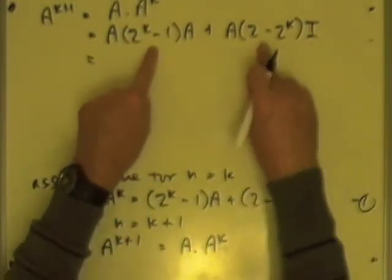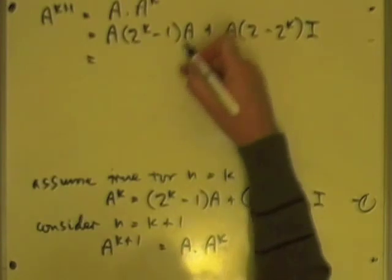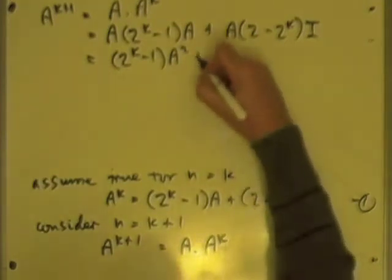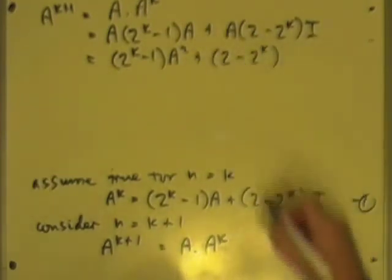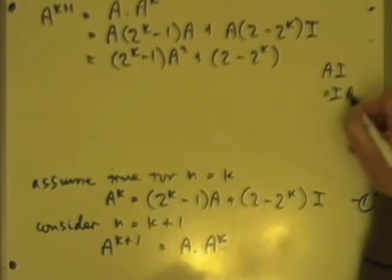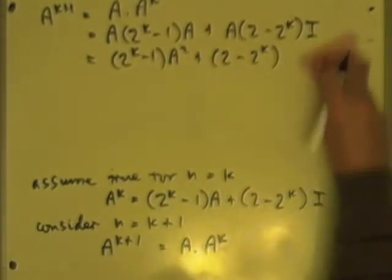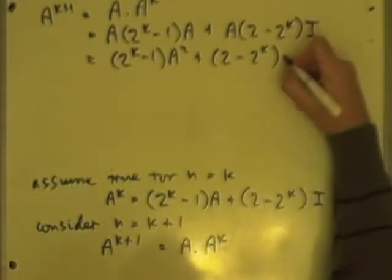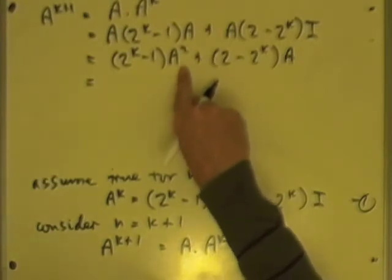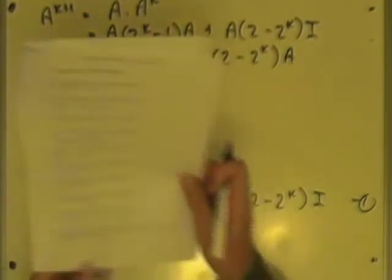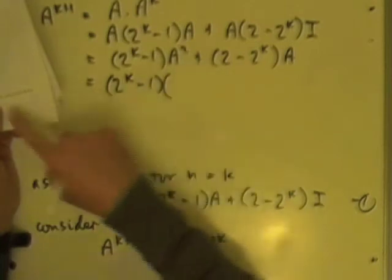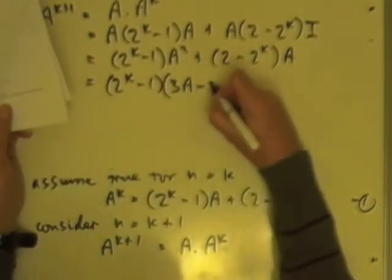These are matrices, but these multiplying factors are just constants, so I can take them to the front. That gives me 2 to the k minus 1 times A squared, and A times I is just A since I is the identity element. Now A squared was already defined in the first part of the problem: A squared equals 3A minus 2I. So I have 2 to the k minus 1 times the quantity 3A minus 2I, plus 2 minus 2 to the k times A.